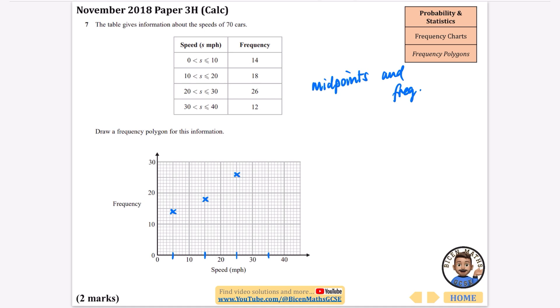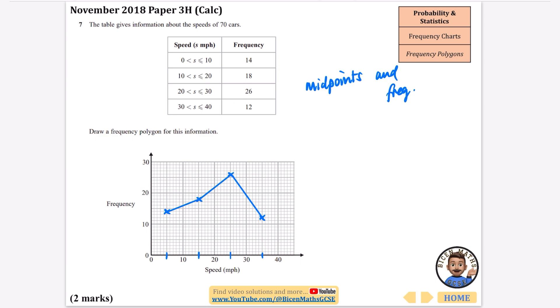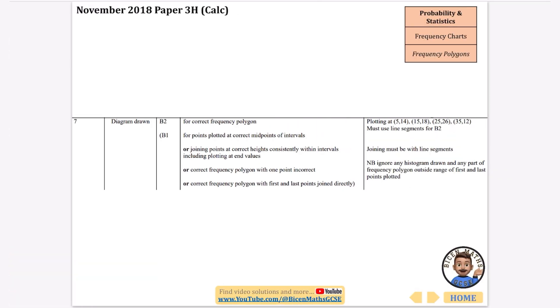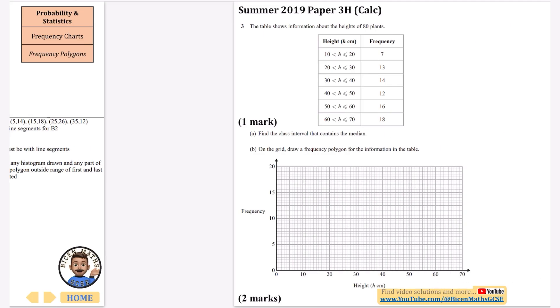Now literally these are like the easiest two marks that you could ever need, but sometimes people just don't know it because they've never actually revised what a frequency polygon is. So hopefully if you're watching this video you'll just be like great that's an easy two marks to get and it's the correct diagram, so I can't really show you this part that we've got here.